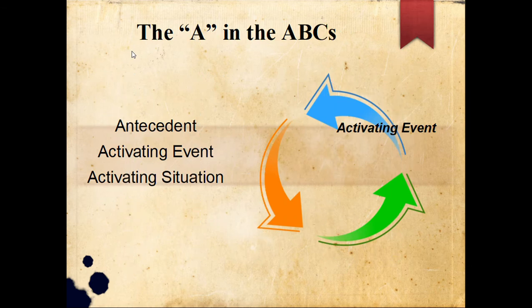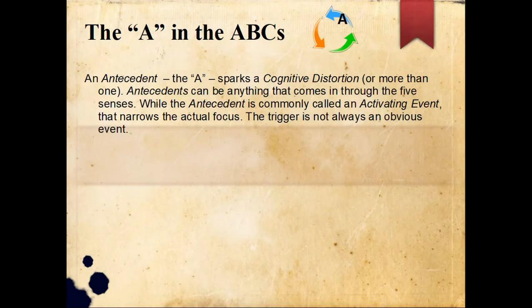Here we have our cycle. The blue arrow is indicated as the activating event — Antecedent. A is sometimes called the activating situation; it's usually called the activating event, although I don't like that. I prefer the word antecedent. The A sparks a cognitive distortion, or more than one — sometimes it's a series.